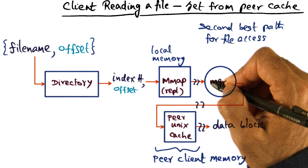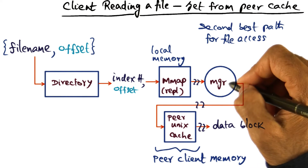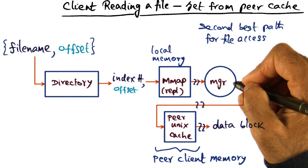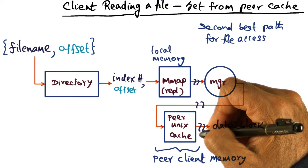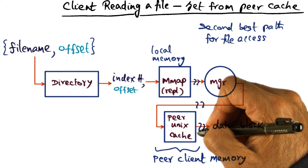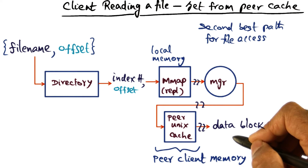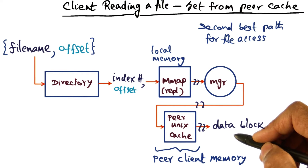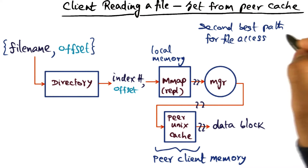This might involve a network hop because if the manager node is different from the local node, then I have to go to the manager node across the network. When I get to the manager node, the manager may say that this particular file has been accessed by a different client — it knows that because its metadata says some client has it in their cache. So the manager will tell that client to send the data over to the requester. The data is coming not from local cache, but from the cache of a peer, which is much better than going to disk because network speeds are much faster than disk access. This is the second best path for file access.